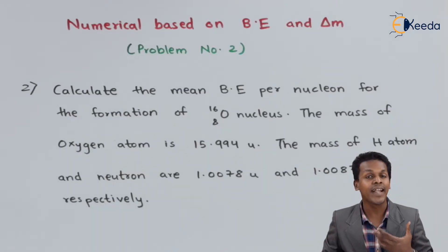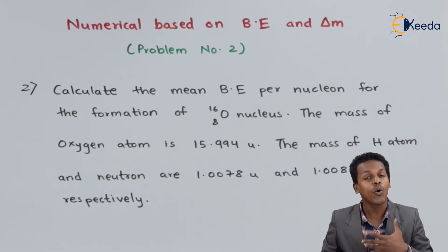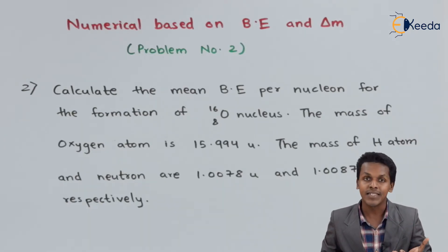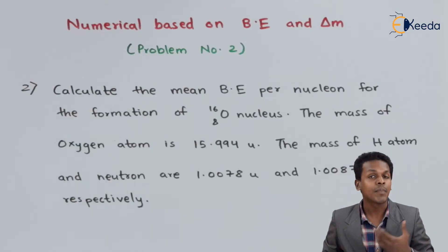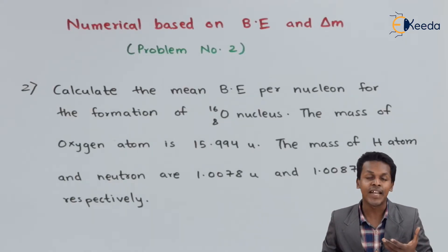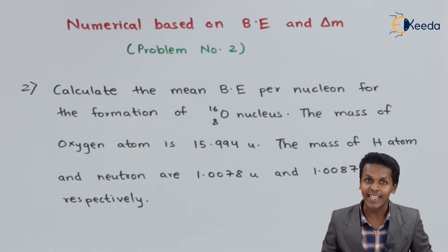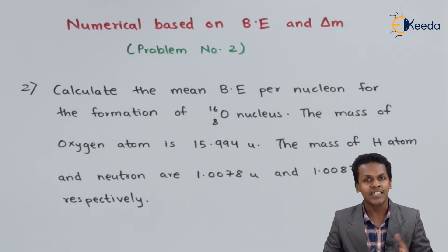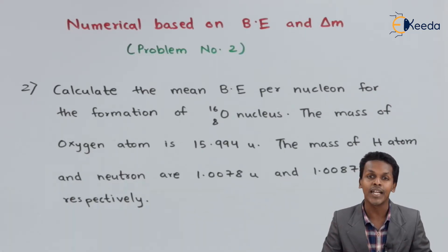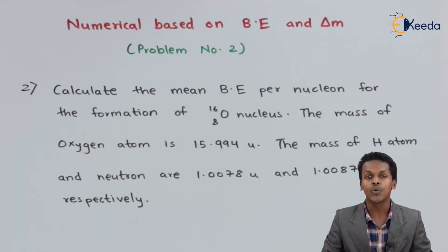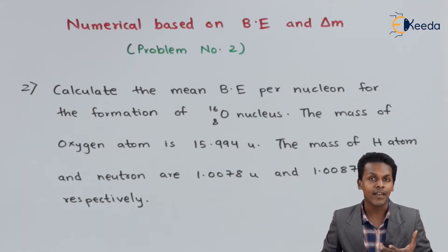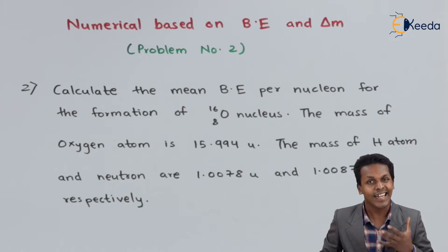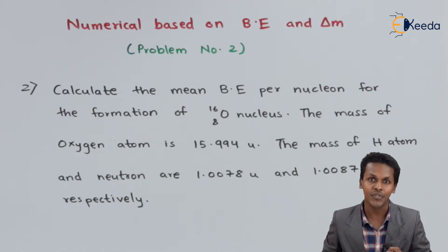To calculate the binding energy per nucleon, we first need to calculate the mass defect, delta m. From that we can find the binding energy, and based on that we can calculate the binding energy per nucleon. So let us extract the data from the above question.